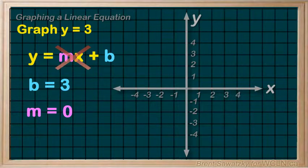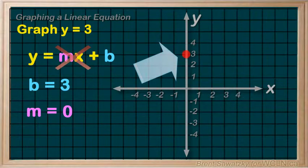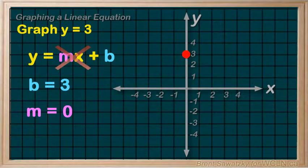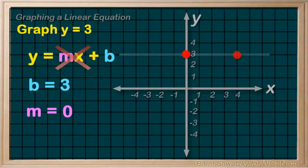So let's plot our y-intercept, our b, at plus three. And from there, since it has a zero slope, our second point could be anywhere as long as it's on the horizontal. We'll draw it like this. And we're all done.